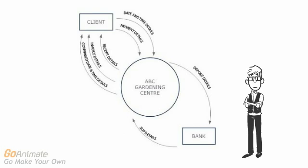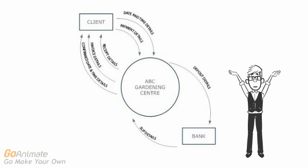After the work is completed, an invoice is given to the client. Payment is made. A receipt is then given to the client. At the end of a period of time, ABC Gardening Center gives to the bank their deposit details. The bank then sends back slip details.